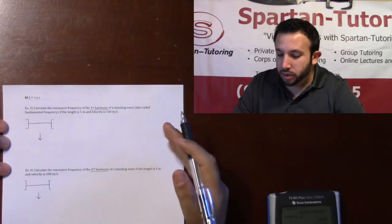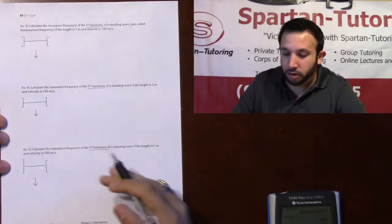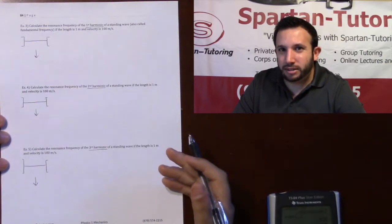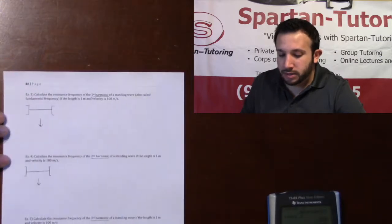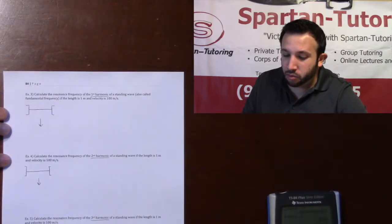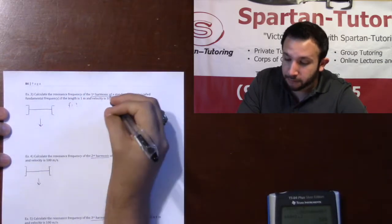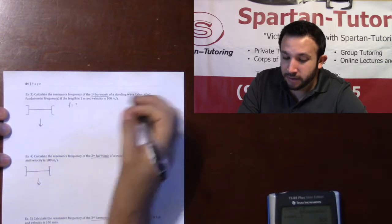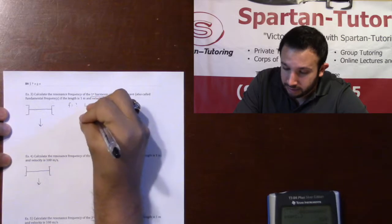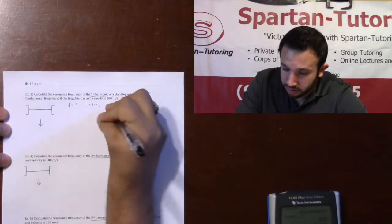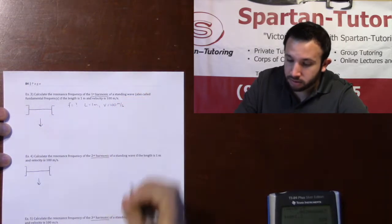Howdy. In this video, we're going to talk about all the different harmonics. I'm going to talk about the first three harmonics, and then from there, you can hypothetically know all infinite numbers. Taking a look at number three, it says calculate the resonance frequency, so F is what I'm looking for, of the first harmonic of a standing wave, also called the fundamental frequency, if the length is equal to one meter and my velocity is equal to 100 meters per second.